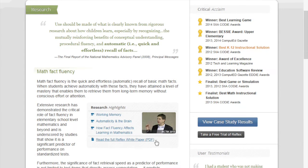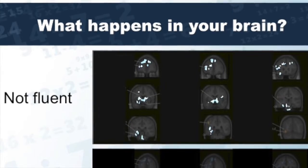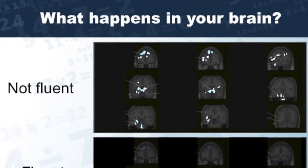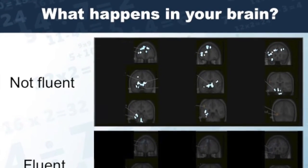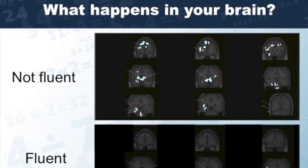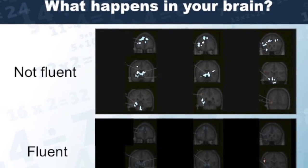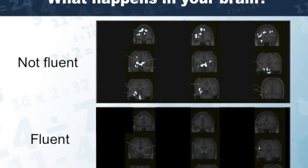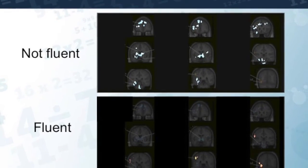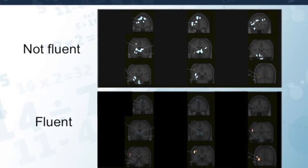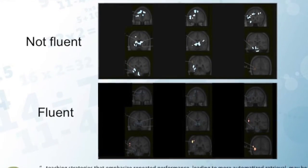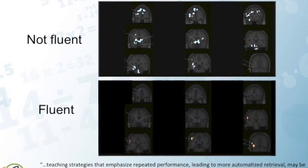Let's take a look at one of those reasons now. These fMRIs show brain activity of students who were and were not fluent in their math facts. While brain activity is plentiful without automaticity, once facts are automatic, valuable brain activity is freed up for more complex problems.